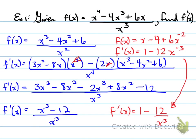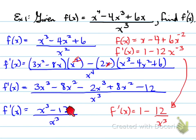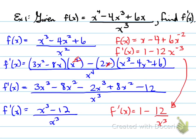Which form is most likely going to be required? The answer is the fraction form — x cubed minus 12 over x cubed. That is the form most likely required. If you were to take the second derivative later on, you can use either form, but that's in the next chapter.